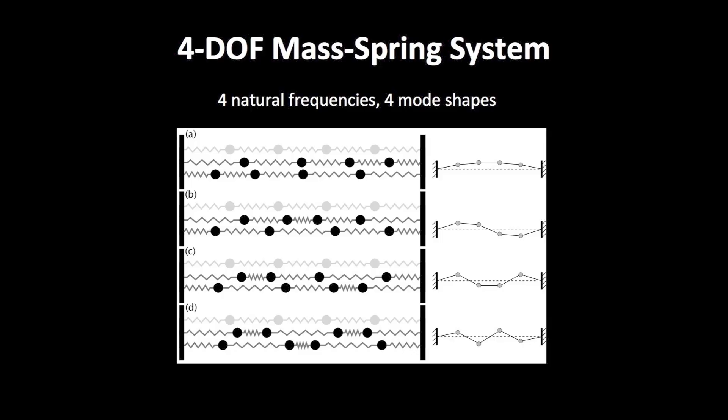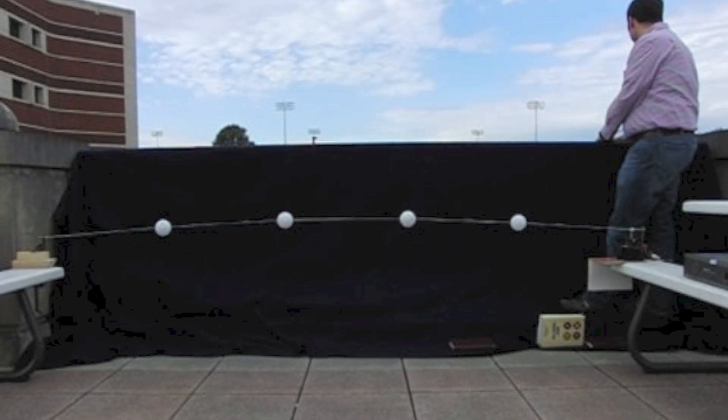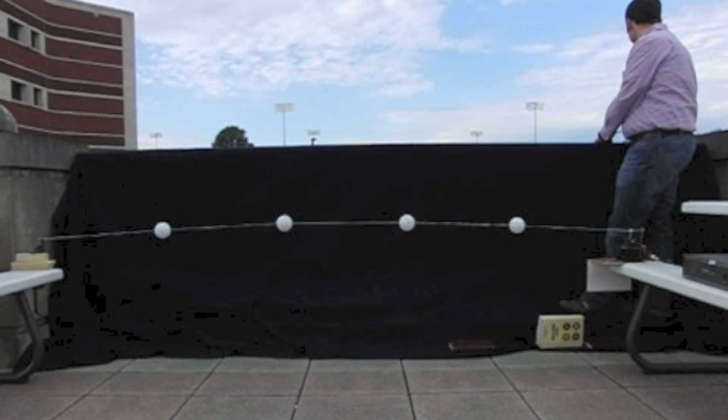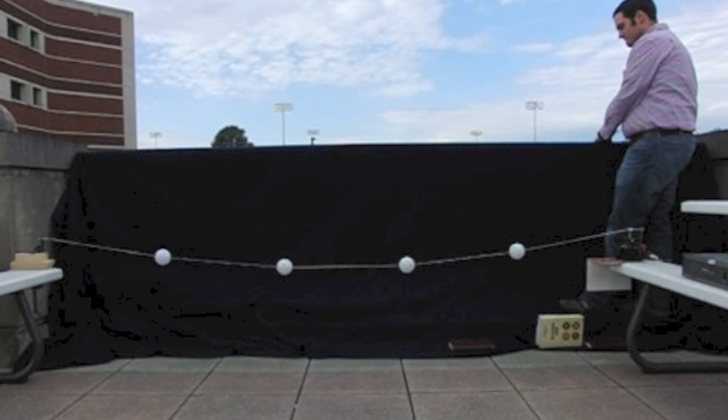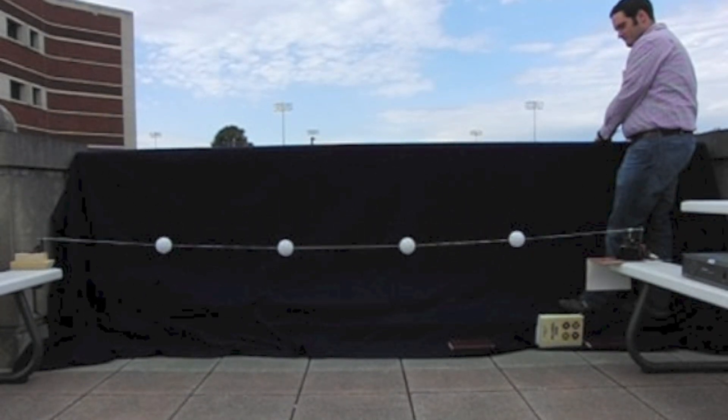A four degree of freedom system would have four natural frequencies. In the first mode, all four masses move together, the outside two with slightly less amplitude than the two in the center, but the entire system moves in the same direction at the same time.